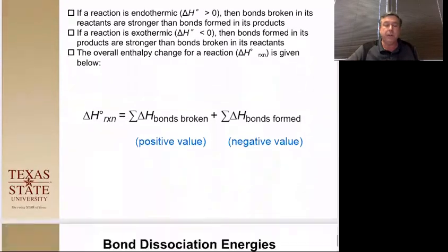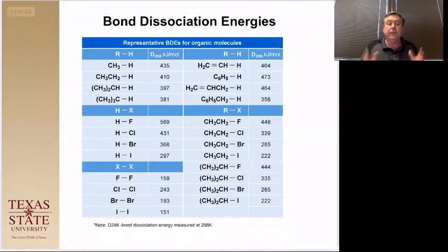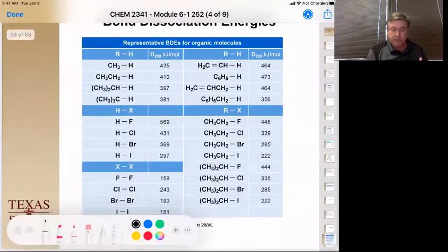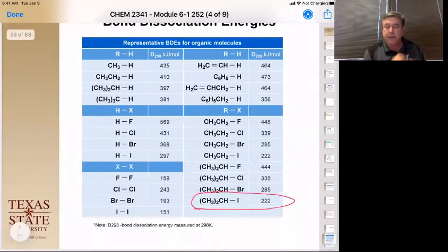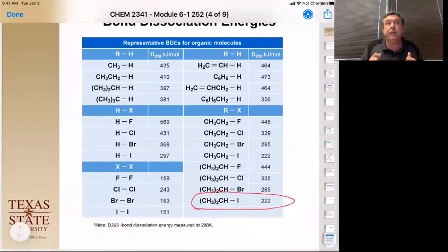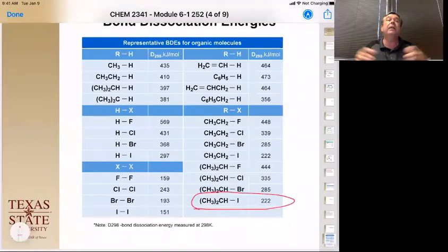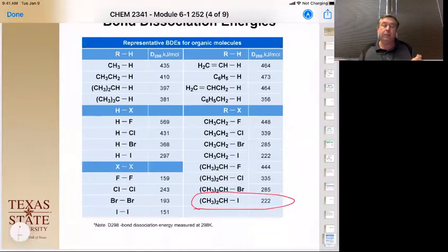So how do we use this to our advantage? By knowing the general trends of bond dissociation energies, you can watch that. Let's say we have an alkyl halide here with an iodine — notice it has a very small bond dissociation energy: 222 kcal/mol. That's one of the lowest numbers on the chart. It's low because it has a very polar bond and a very long bond. So this is going to be lower energy to break that bond apart.